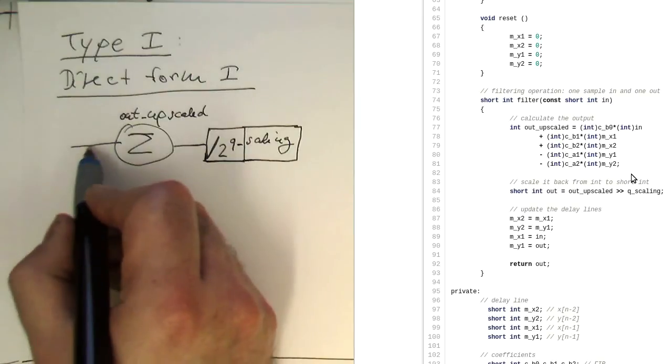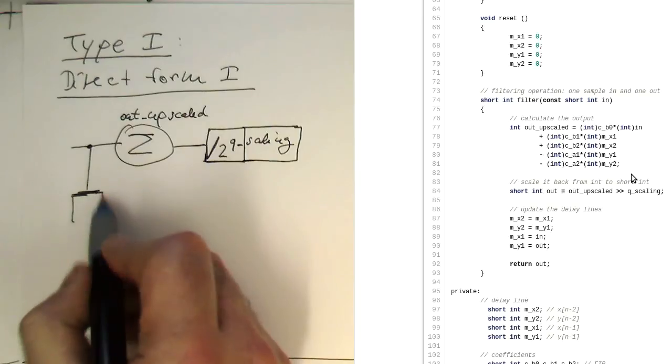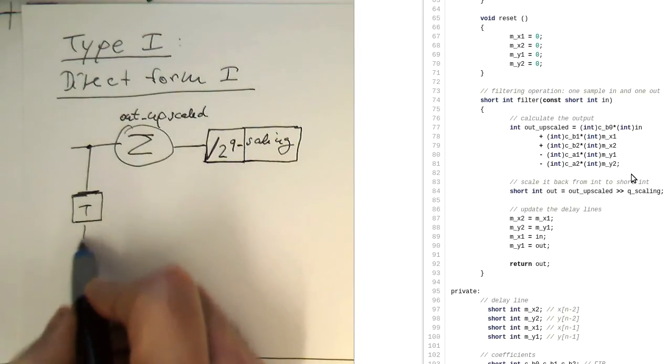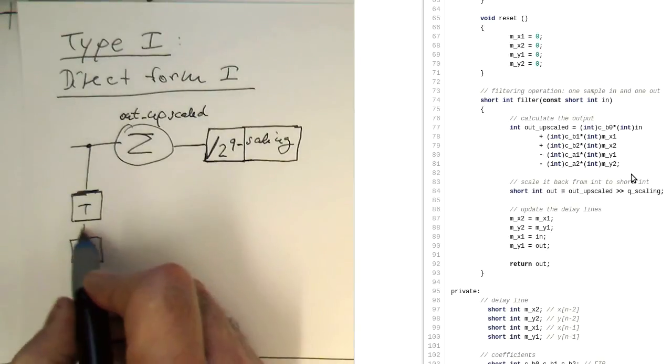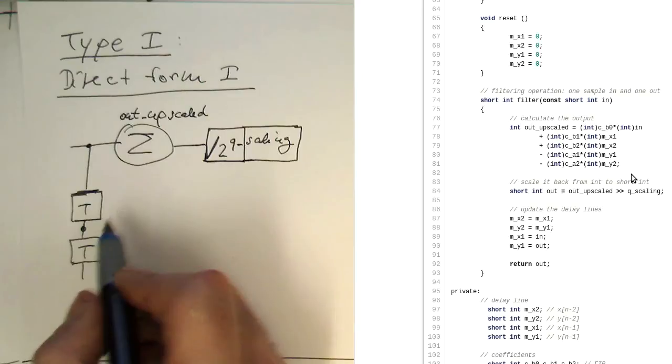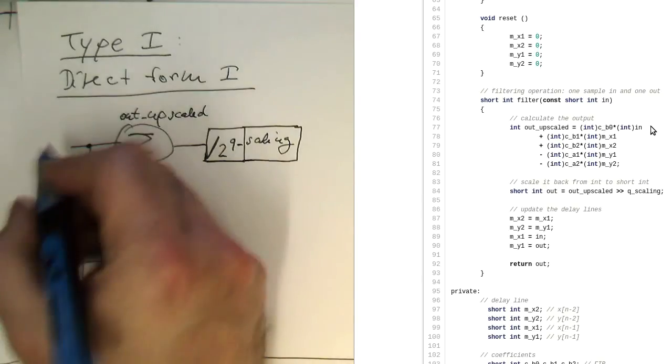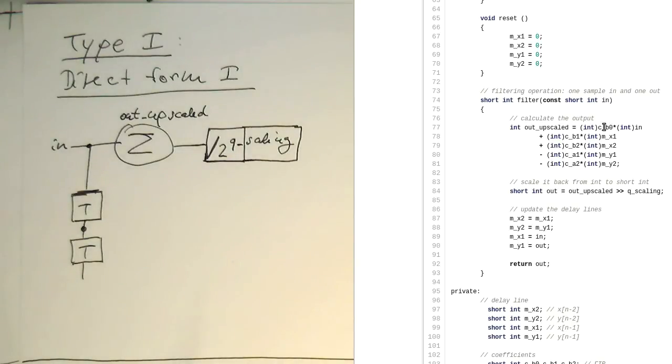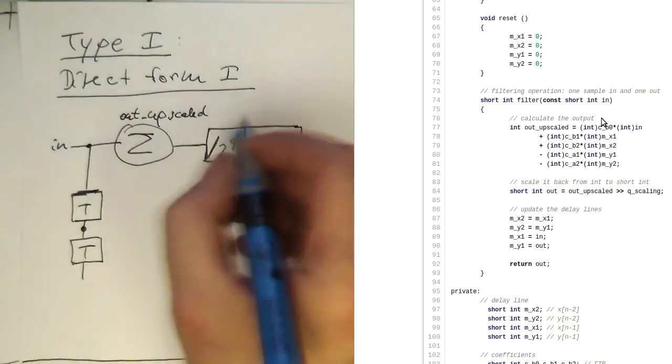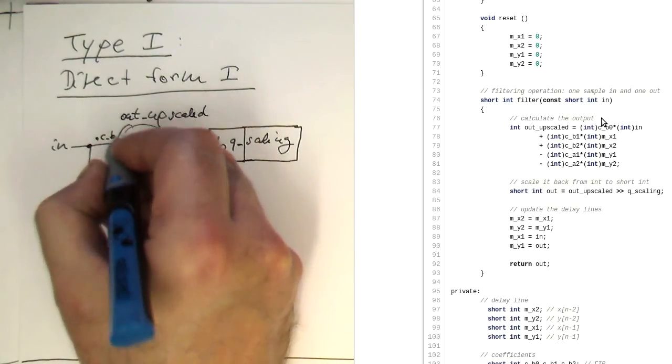Divided by 2 to the Q scaling - let me make this box a bit bigger - so that's our scaling factor here. At the input we have our delay line, and we've got our coefficients. These coefficients are now already scaled up. So the input, our in variable, is multiplied by C_B0.